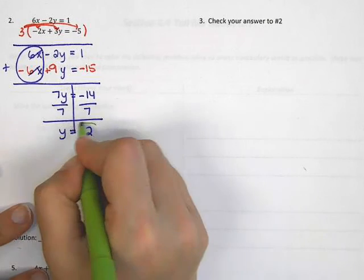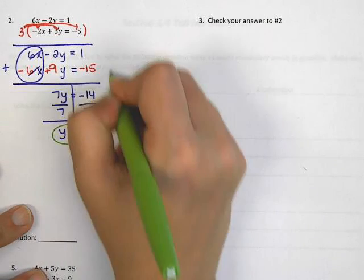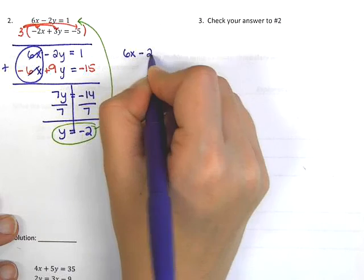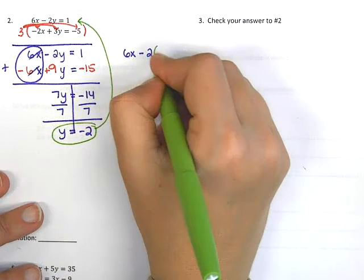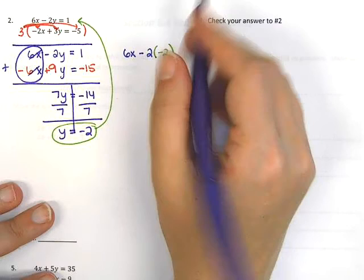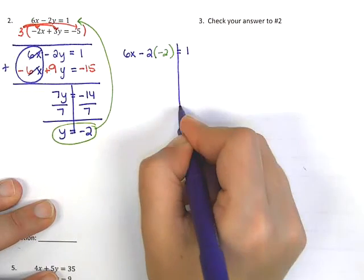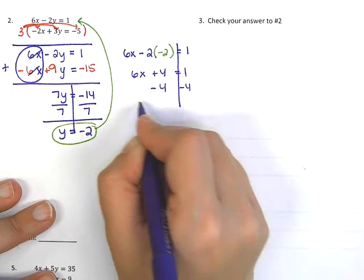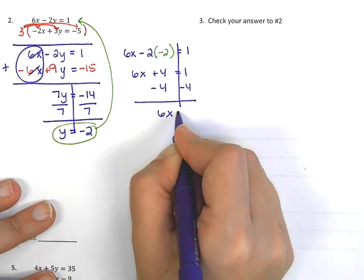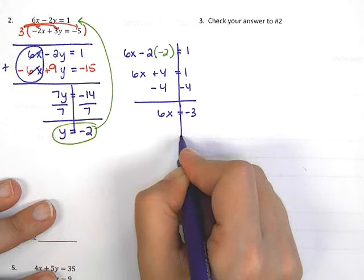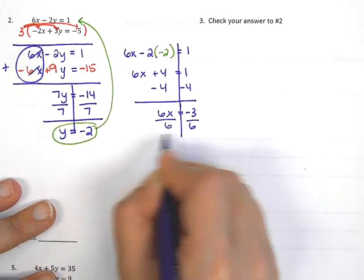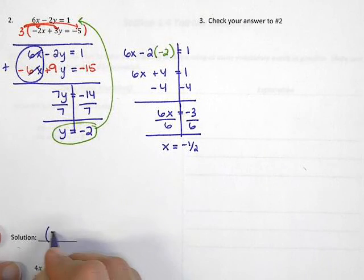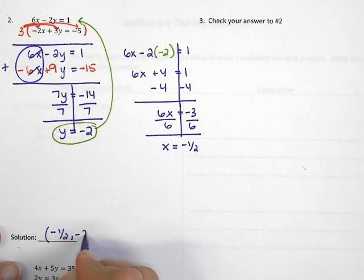Now I take negative 2 and plug it into the first equation: 6x minus 2 times negative 2 equals 1. Negative 2 times negative 2 is 4. I subtract 4 on both sides, then divide by 6, and I get x equals negative 1 half. My answer to this problem is negative 1 half, negative 2.